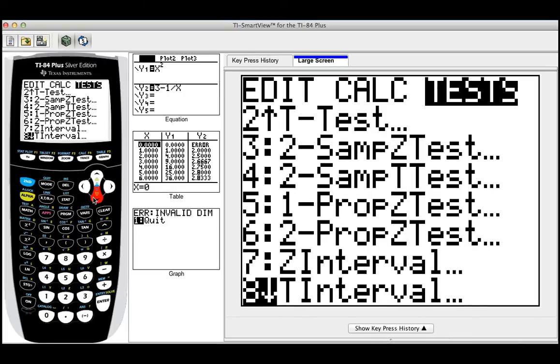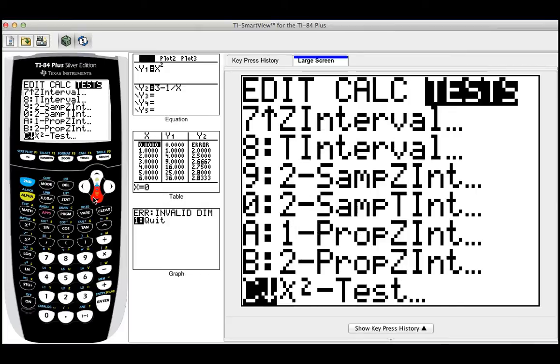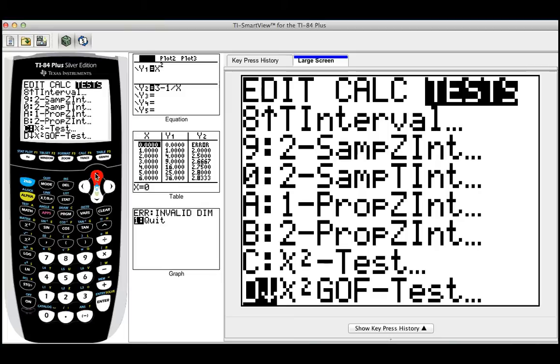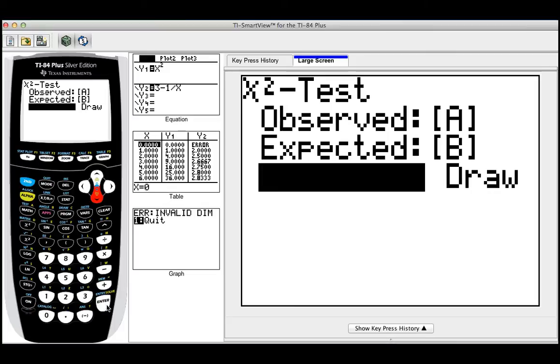So you go all the way to the bottom, and I'm just going slow so you can see exactly where the test is. And bingo, I found it right here. X squared, and then it says test. The observed matrix is going to be A. The expected is going to be B, and you can either calculate or click on draw.